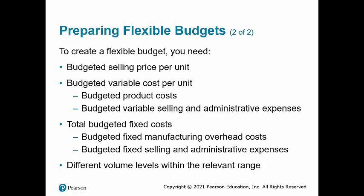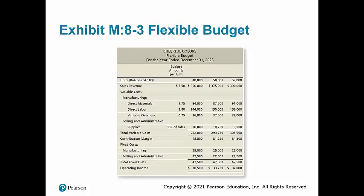We will also need different volume levels within the relevant range. This exhibit shows a flexible budget for Cheerful Colors that predicts revenues and expenses if sales reach 48,000, 50,000, or 52,000 batches of crayons during 2025. The budgeted sales price per batch is $7.50. Budgeted variable costs are $1.75 for direct materials, $3.00 for direct labor, $0.75 for variable manufacturing overhead, and 5% of sales revenue for selling and administrative. Budgeted fixed costs are $25,000 for manufacturing overhead and $22,500 for selling and administrative.